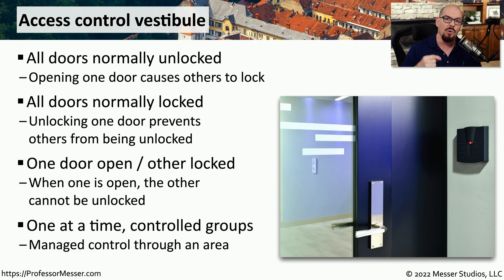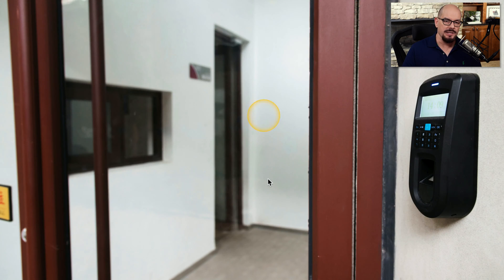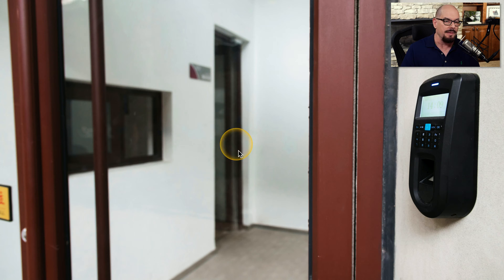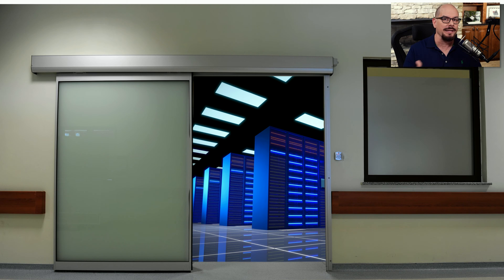While that's happening, only one person is able to move through the room at any particular time, allowing the organization to control exactly who moves in and out of that facility. Here's another common access control vestibule. You would provide a personal identification number, a badge, or a fingerprint to unlock the door. Once inside, you can talk to the guard, provide your credentials, make sure that you're allowed to go into the data center, and at that point he can open the door and allow you access. This is a common way to provide access control to a highly secure environment and to make sure that someone doesn't find their way into the room without first going through the proper authentication.